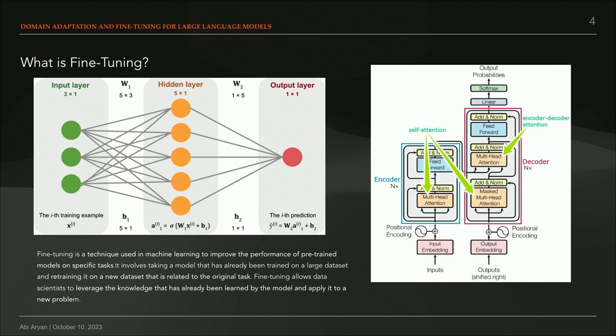What is fine-tuning? Fine-tuning is essentially a way of teaching the model to learn something for which it hasn't already been trained — improving the performance of a pre-trained model. One way we do that is by updating the parameters. You take some inputs, you have a hidden layer where you calculate the weights and biases, and then you have an output layer. For people who don't know the structure of a transformer model: there's an encoder, there's a decoder, and we'll go into more detail on these while talking about different fine-tuning methods.